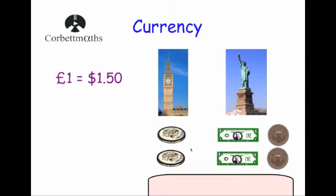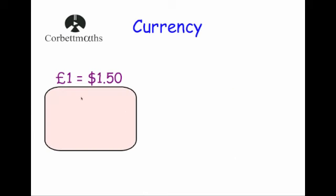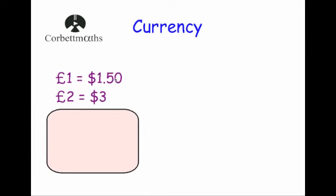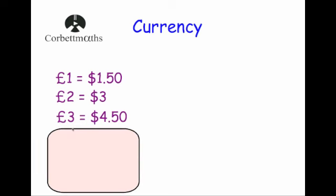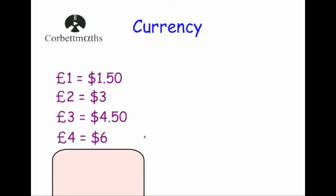So if you give them two pounds you get three dollars back, because you get another $1.50. For three pounds it would be $4.50, and for four pounds it would be six dollars, and so on. That's how an exchange rate works — you give them a certain amount of money and you get money back.